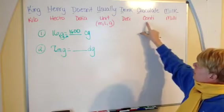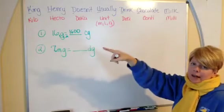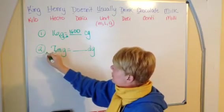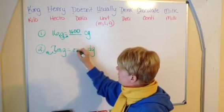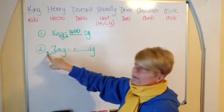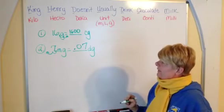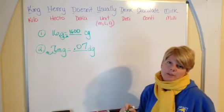So you're going to travel one, two places to the left, one, two places to the left. Make sure you have your arrow shown there. So it's going to be 700 decigrams.